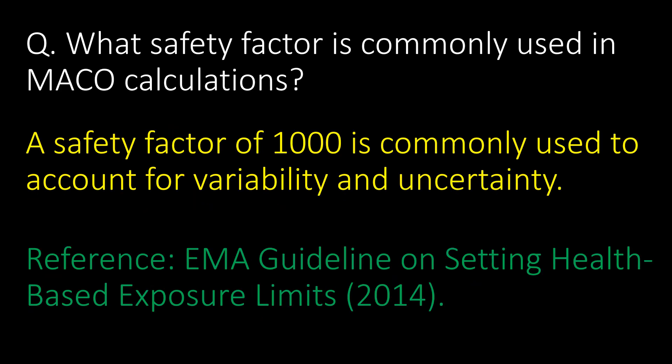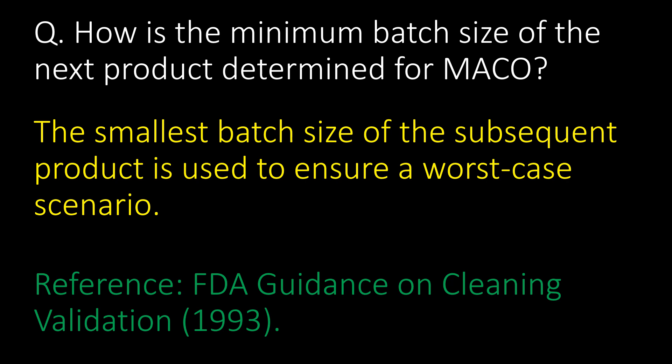What safety factor is commonly used in MACO calculations? A safety factor of 1000 is commonly used to account for variability and uncertainty. Reference: EMA guideline on setting health-based exposure limits, 2014. How is the minimum batch size of the next product determined for MACO? The smallest batch size of the subsequent product is used to ensure a worst-case scenario. Reference: EMA guidance on cleaning validation, 1993.